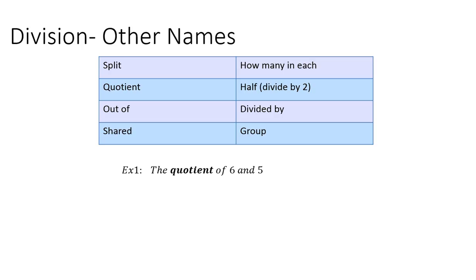So example 1, the quotient of 6 and 5. What that means is you're going to divide 6, divided by 5. You can also write it like that.